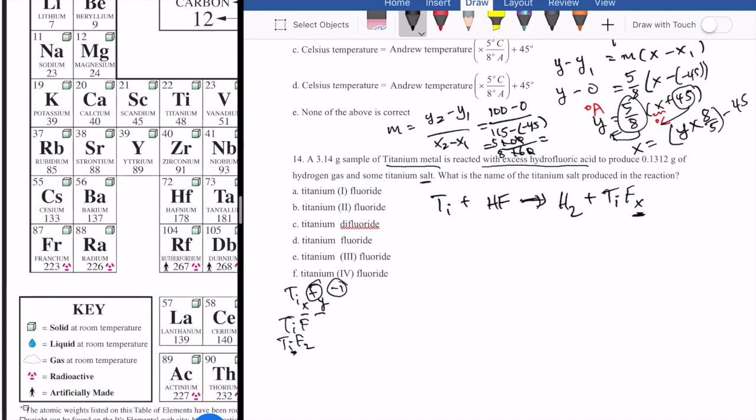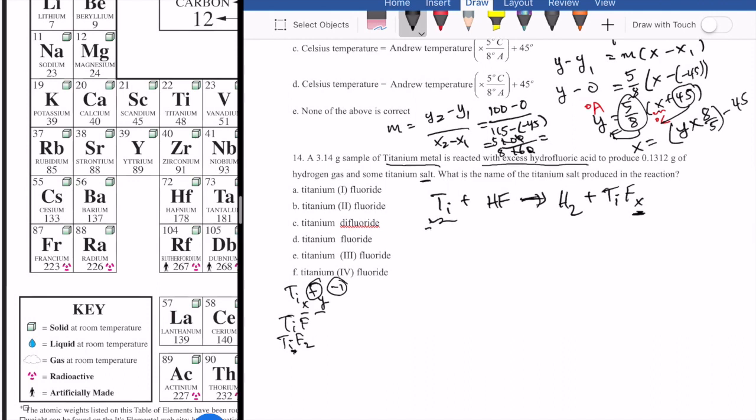We're told a couple of things. There is 3.14 grams of titanium, excess hydrofluoric acid (so that's not going to determine stoichiometry), and we make 0.1312 grams of hydrogen gas. To figure out the identity of x, we need to know what stoichiometric relationship exists between these four species: Ti, HF, H2, and TiFx.